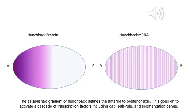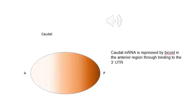This gradient defines the anterior-to-posterior axis and activates a cascade that includes both gap and pair-rule genes to further specify Drosophila regions. Caudal protein will also define the posterior region of the embryo even further. This gradient is set up through the repression of Bicoid in the anterior.